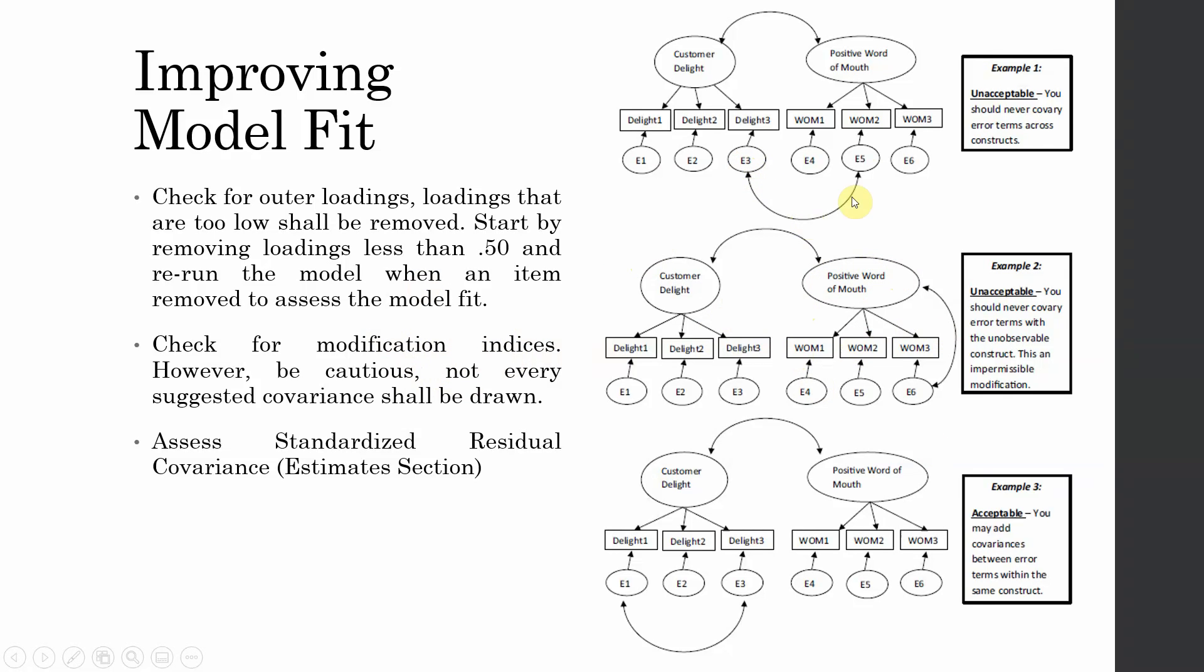You cannot draw covariance between two error terms that belong to two different constructs. Modification indices is all about drawing covariances. You cannot draw covariance between error terms and your latent construct. The only thing that is acceptable is drawing covariances between error terms from a similar construct.